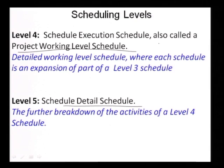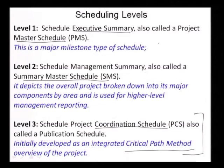For level 4, it will be going to the execution team, and level 5 will be the detail at the craft level — they should know what the detail schedule is. By going through these levels, you get an understanding that your project organization and your scheduling functions have to be correlated. Without that correlation, you will not be able to give the right report to the right person.